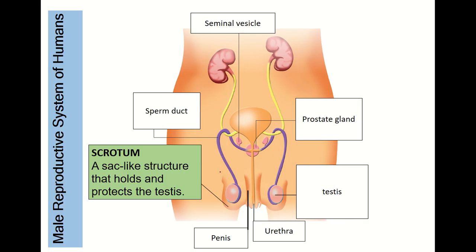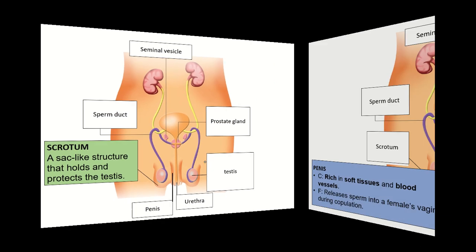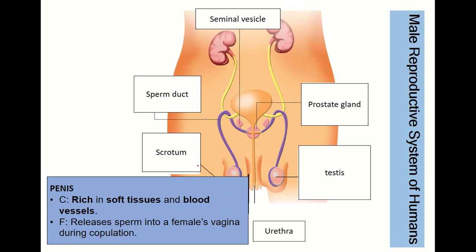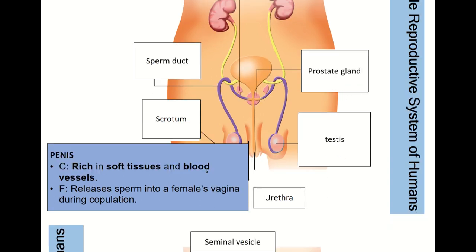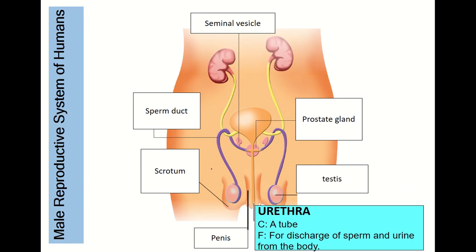The scrotum is a sac-like structure whose function is to hold and protect the testes. The penis is rich in soft tissue and blood vessels; its function is to release sperm into the female vagina during copulation. The urethra is a tube structure for the discharge of sperm and urine from the body.